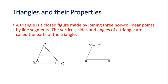A triangle is a closed figure made by joining three non-collinear points by line segments. So it is made by joining three non-collinear points. This is one point, this is second and this is third one. Why is it said as non-collinear? Because they are not lying in a straight line.